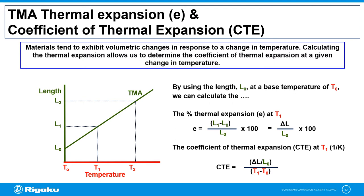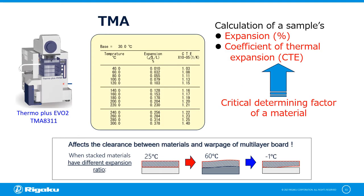Materials tend to exhibit volumetric changes in response to the change in temperature, which can be expressed in a numerical value called coefficient of thermal expansion, or CTE. When calculating the CTE of a material at a particular temperature, first we need to calculate the thermal expansion of a material at a given temperature. All these calculations are performed by the software. Here is an example of a thermal expansion and CTE calculation by the software at a specific base temperature. CTE values are used as a determining factor, especially in multilayer materials.